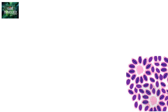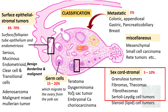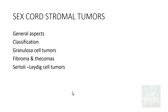Welcome back to this short tutorial from Pathology Made Simple at ILovePathology.com. This is part 6 of the ovarian tumour series, and in this part we shall learn about sex cord stromal tumours. We had previously discussed surface epithelial stromal tumours, germ cell tumours, and metastatic tumours. Today we will discuss granulosa cell tumours, fibromas, thecomas, and Sertoli-Leydig cell tumours.